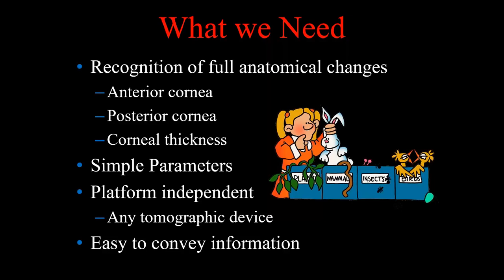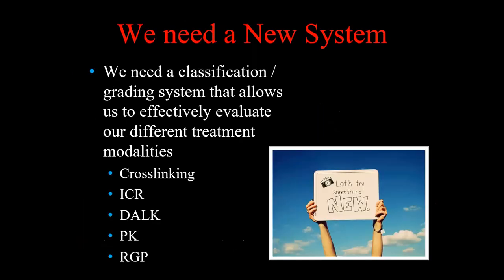What we need, as stated in the global consensus, is a classification that recognizes all anatomical layers: the anterior surface, posterior surface, and corneal thickness, using parameters that are relatively simple and platform-independent — requiring any tomographic device, not a Placido system. The information should be easy to convey, because we now have modalities like cross-linking that weren't available in the 1940s. We don't want to wait until someone has major anterior changes and decreased vision before stabilizing their disease.